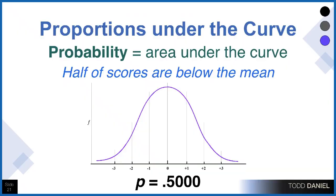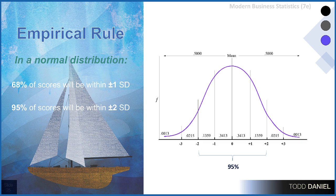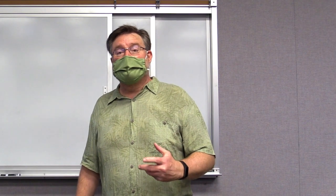Because of the perfect nature of the normal curve, we can determine exactly the probability of where scores occur underneath any portion of the curve. The upper and lower halves are identical, each containing a proportion of 0.500. This allows us to use the empirical rule: 68% of scores will be within one standard deviation above and below the mean, 95% will be within two standard deviations, and 99% will be within three standard deviations.